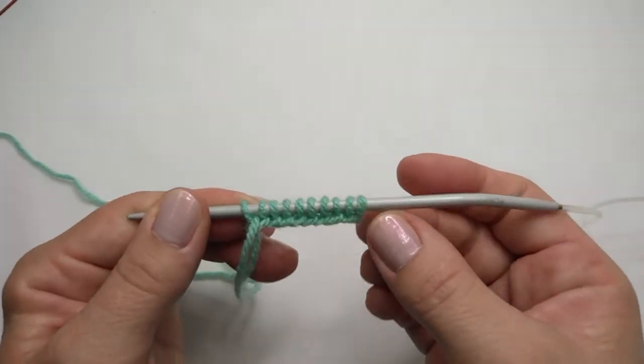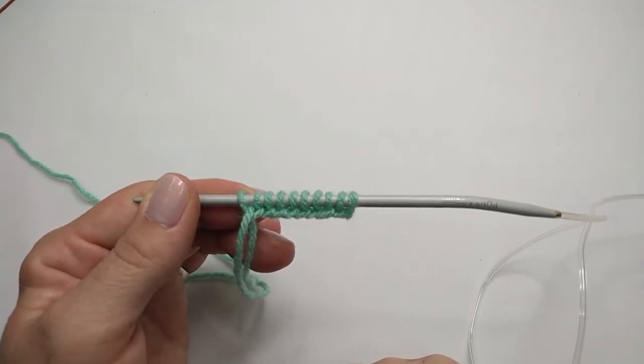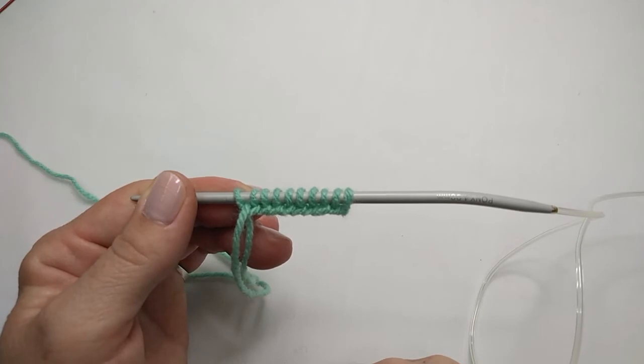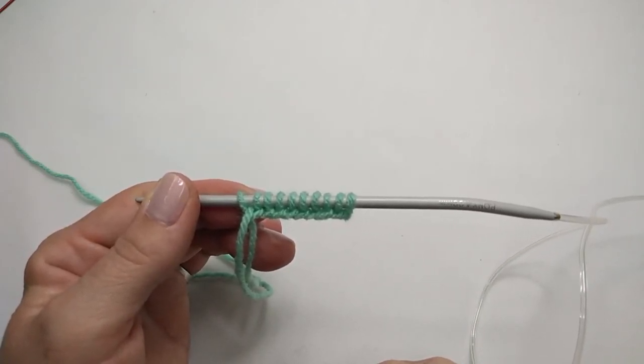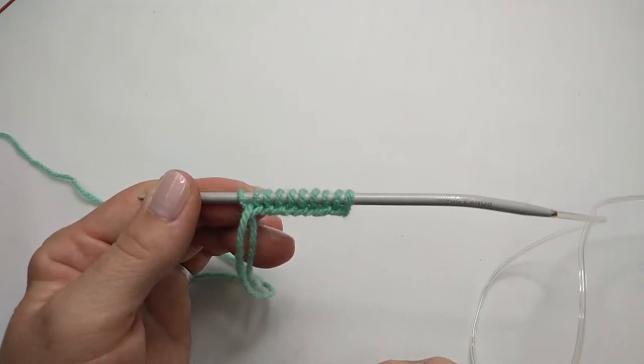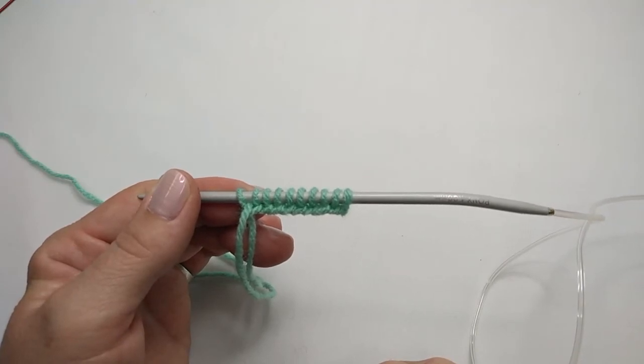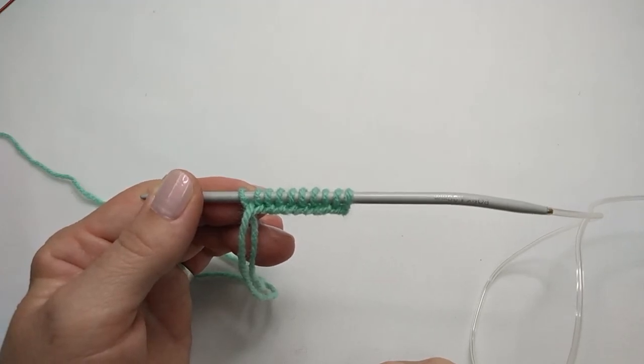Right, so this is how we do the long tail cast on. And if you would like you can click through to the second part of this tutorial where I will be showing you how to do the knit stitch. If you have found this tutorial helpful please give me a thumbs up and subscribe to the channel if you haven't done so already. It really helps the channel a lot and it ensures that you get a notification when I upload a new video. Thank you for watching, happy crafting.